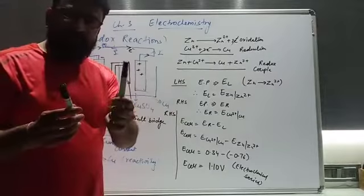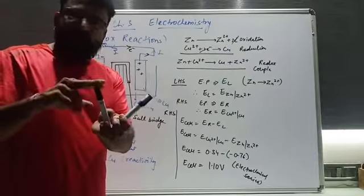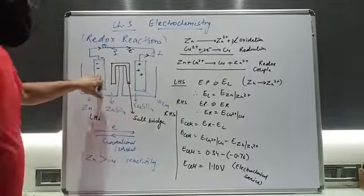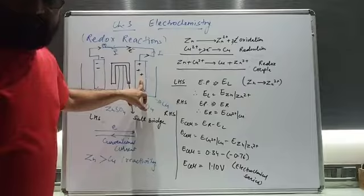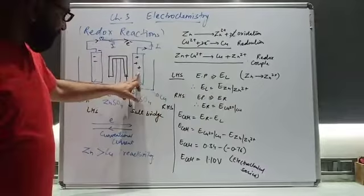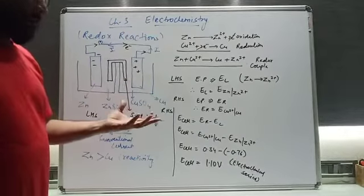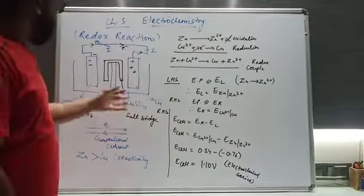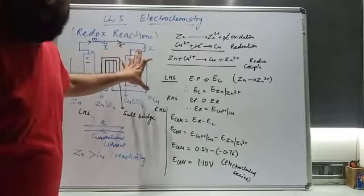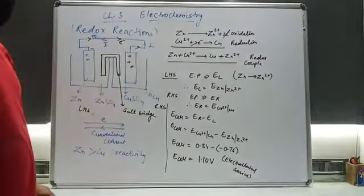Copper acts as the positive electrode because it gains electrons. Although the copper rod itself is already in neutral form, the electrons that travel through the wire go into the copper sulfate solution, where copper ions (Cu²⁺) are present. These ions absorb the electrons and are converted into copper — they undergo reduction. So zinc has negative electrode potential and copper has positive electrode potential. The left-hand side is zinc, and the right-hand side is copper, both connected through the U-shaped salt bridge.